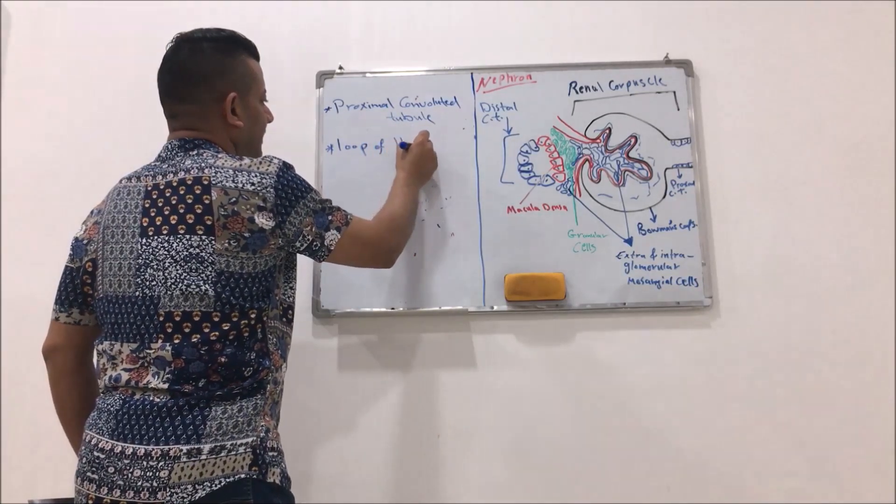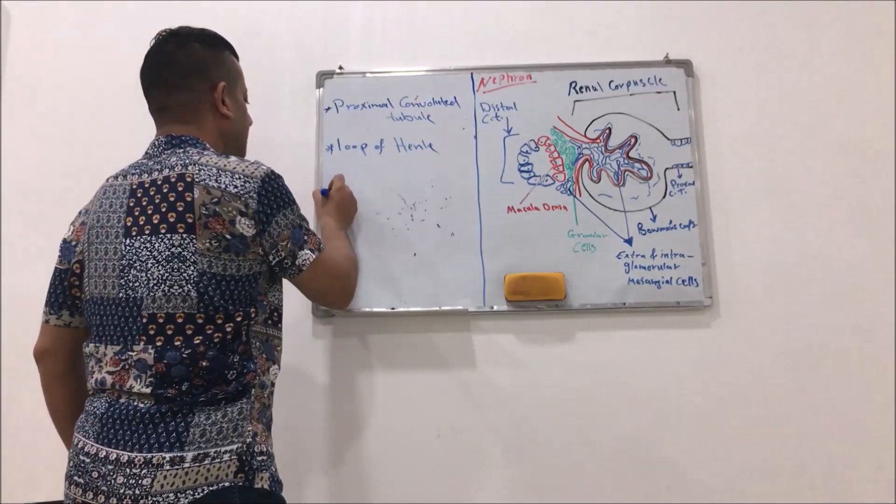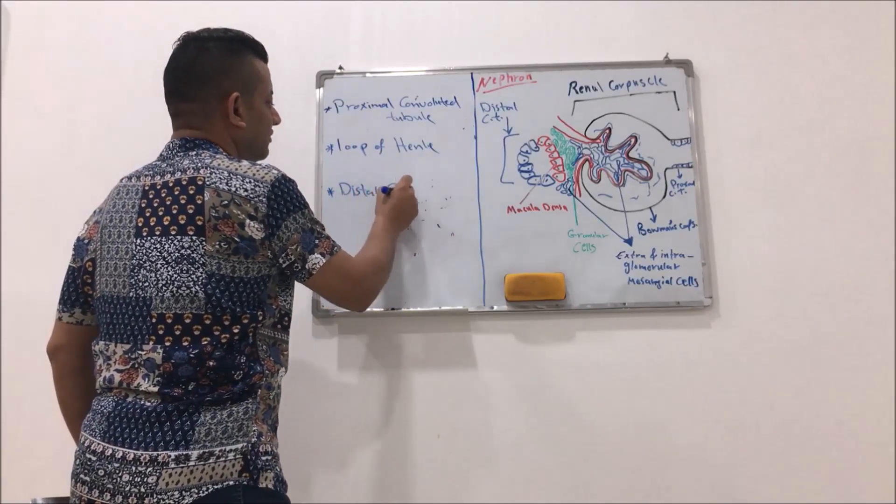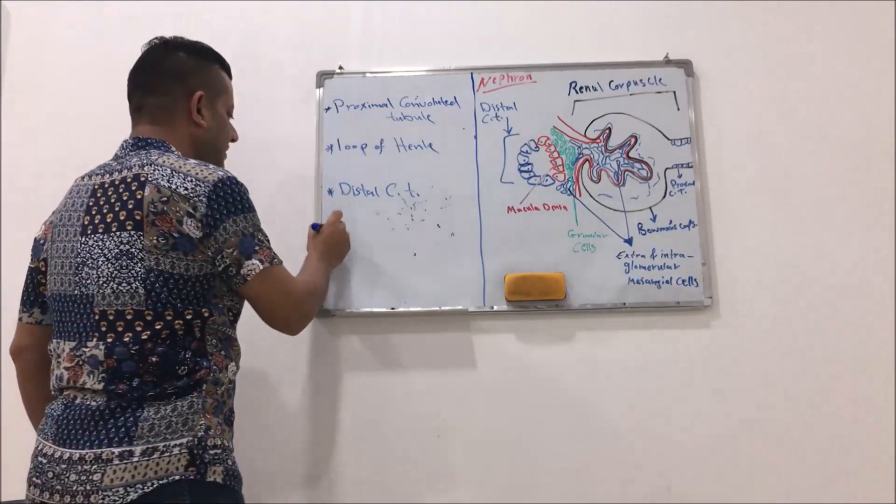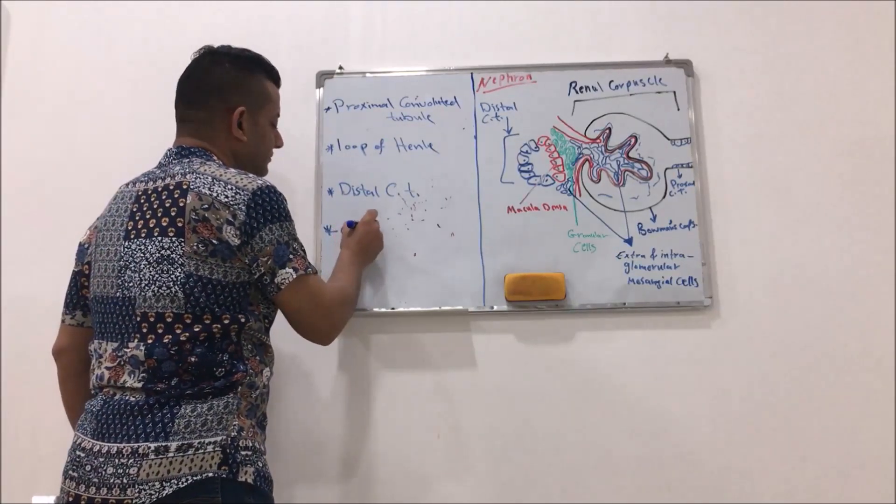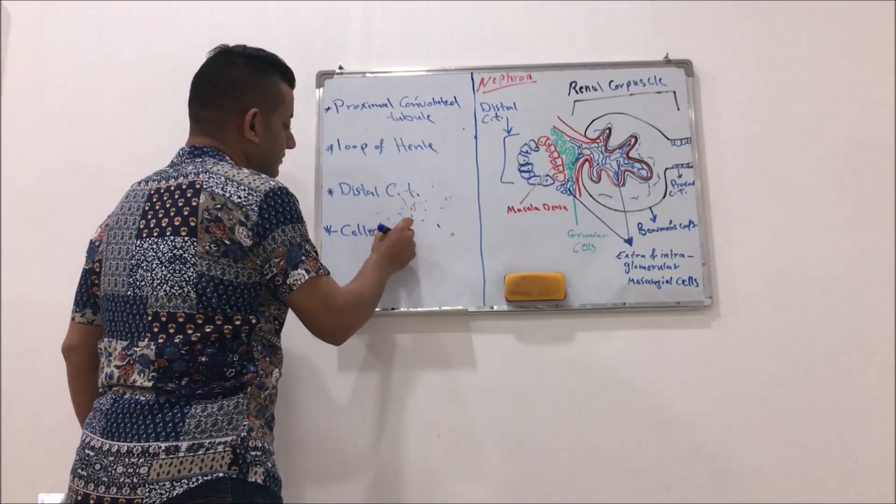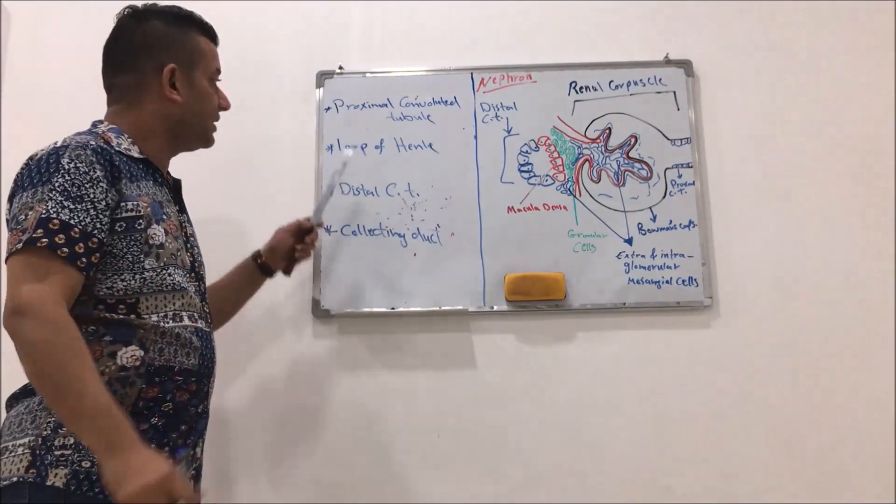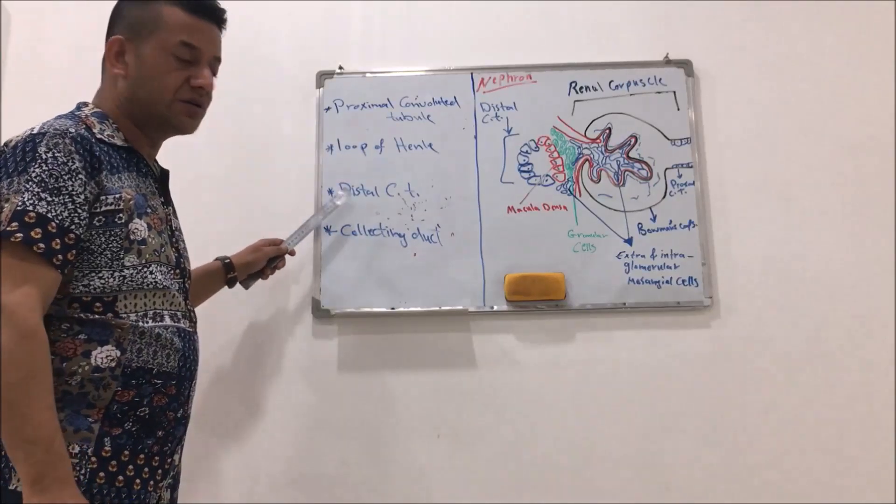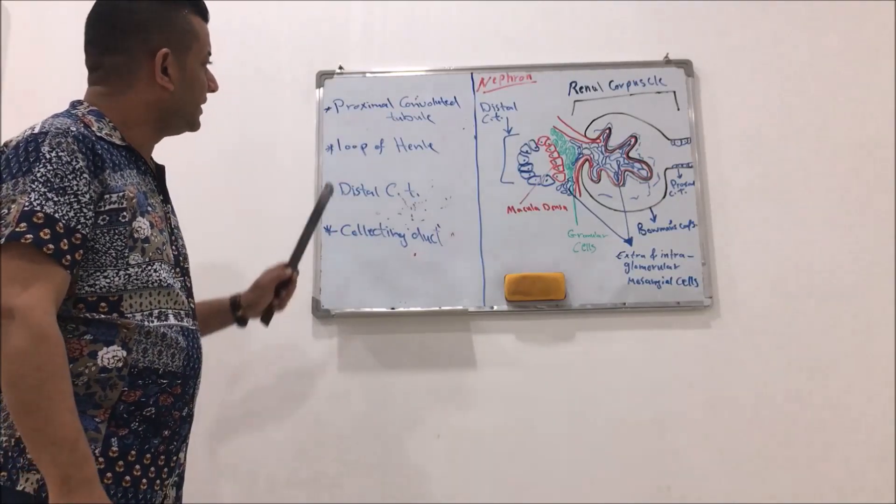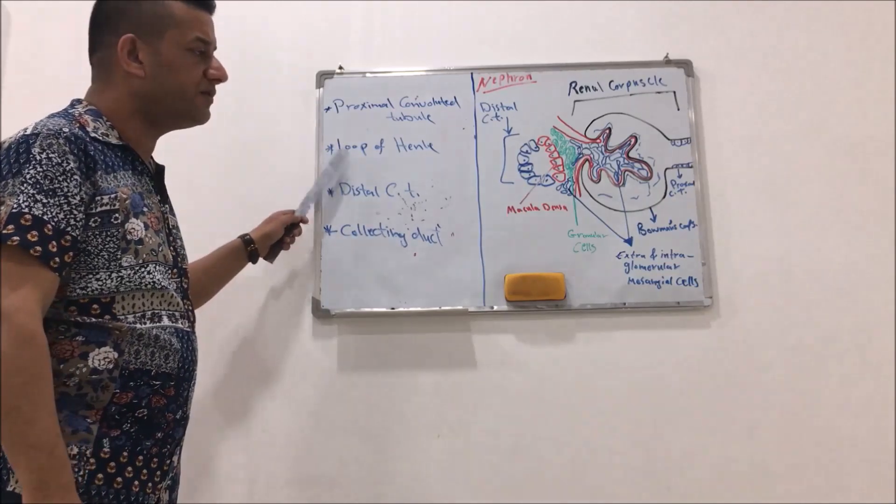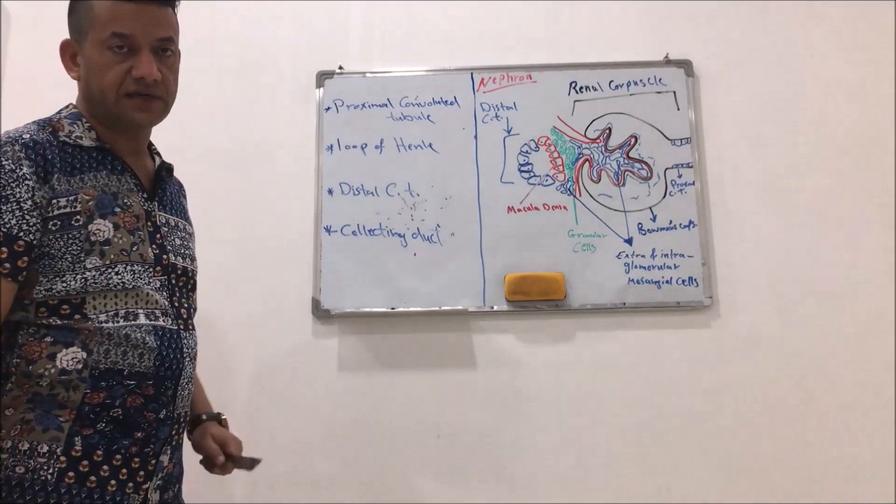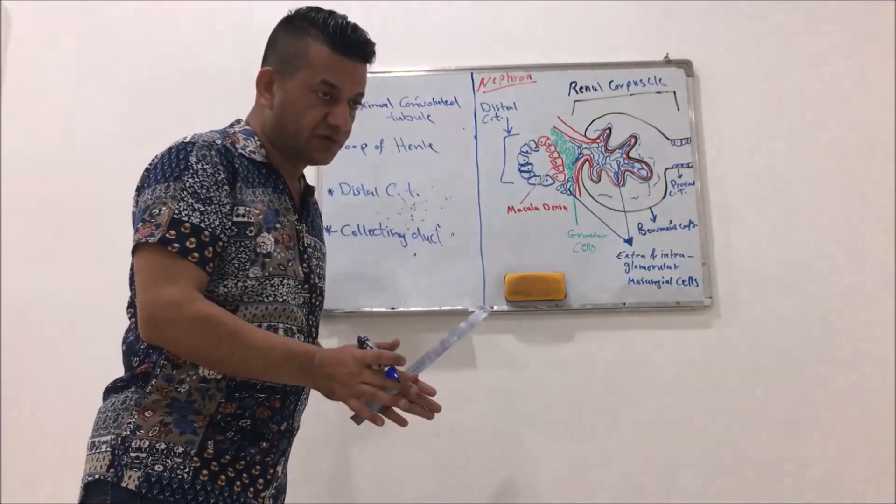The parts of nephron: the proximal convoluted tubule, the loop of Henle, the distal convoluted tubule, and the collecting duct. So these are the major parts or components of the nephron.